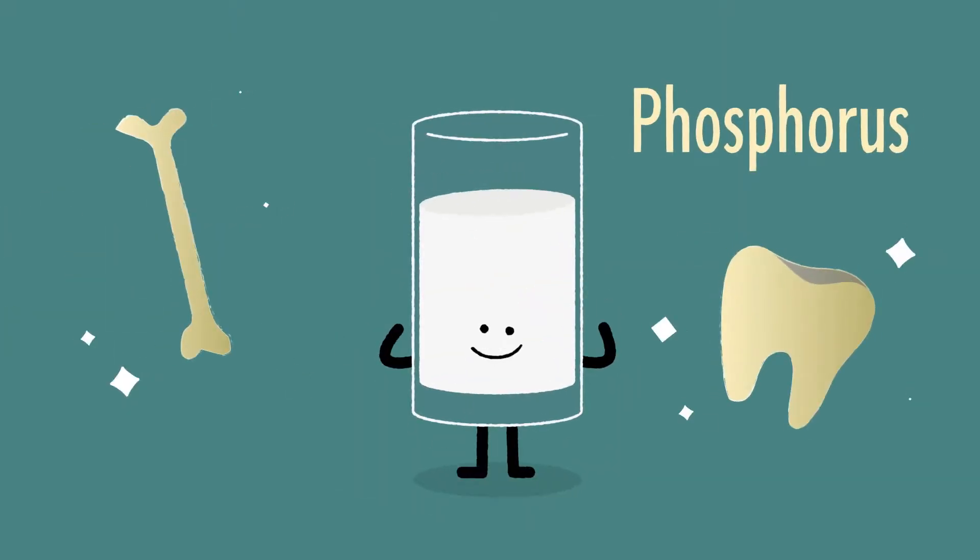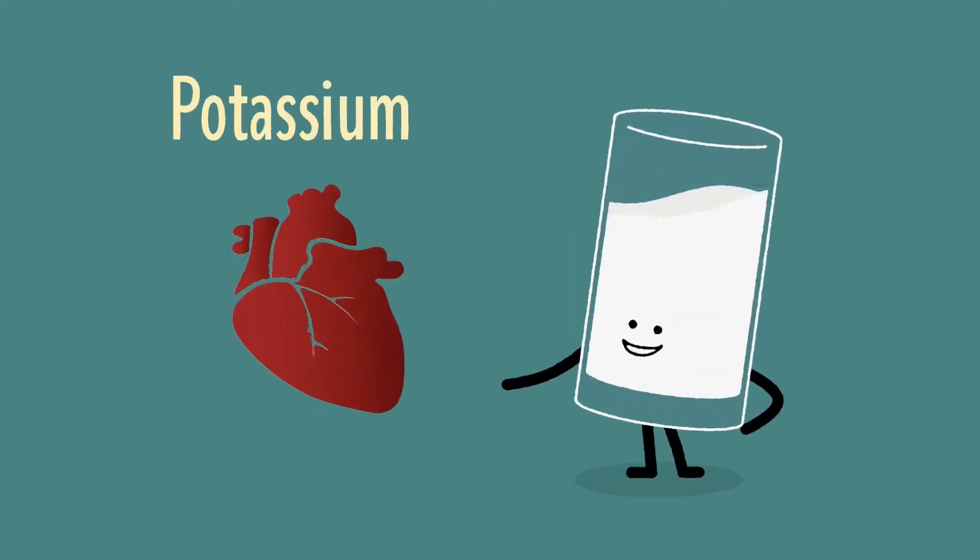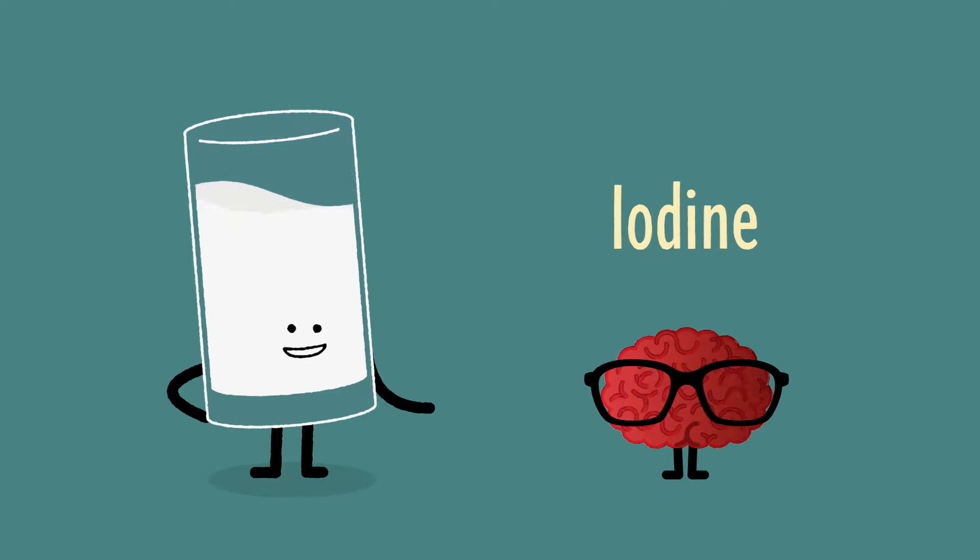Phosphorus for bones and teeth. Potassium which helps maintain normal blood pressure and iodine for normal cognitive function of the brain.